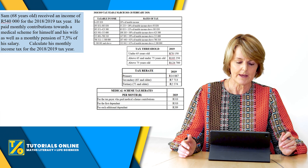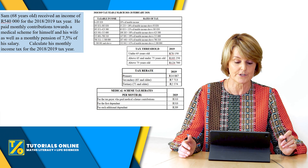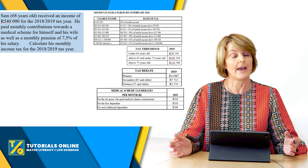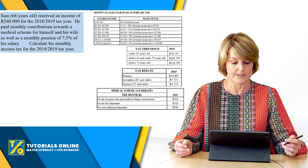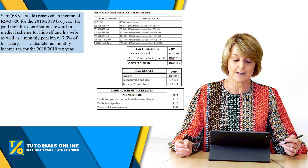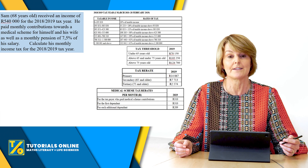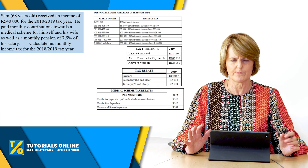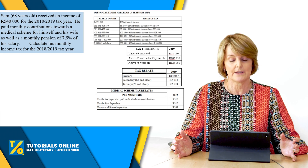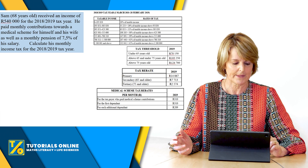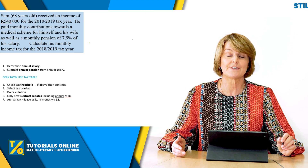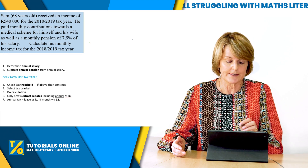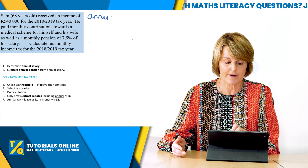Sam is 68 years old. He received an income of 540,000 for the 2018–2019 tax year. He paid monthly contributions towards a medical scheme for himself and his wife, as well as a monthly pension of 7.5% of his salary. The question asks us to calculate his monthly income tax for the 2018–2019 tax year. Those tables shown on the right are what you'd normally be given in your test or exam. His annual salary is 540,000.